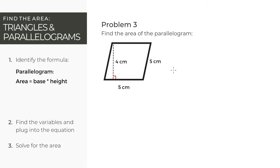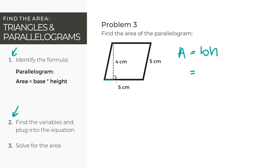Let's now talk about parallelograms. We still have the same steps, but a different equation. Some person a long time ago discovered that the formula for the area of a parallelogram is just base times height. For step 2, let's figure out what the values for the base and height are. Similar to a triangle, the base of a parallelogram is the length of the side it's sitting on at the bottom. Based off of this diagram, the base of this parallelogram is 5 centimeters.